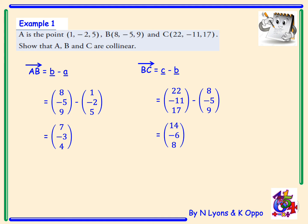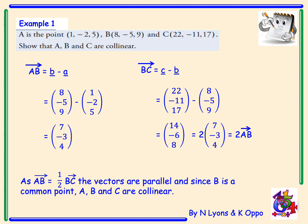Now when we compare the two vectors, we can see here that we can write BC as two lots of AB, or in other words, AB is half of BC.